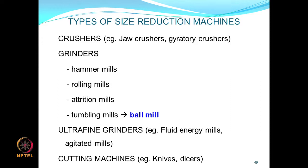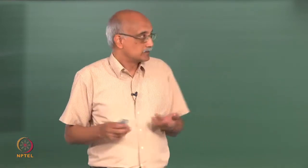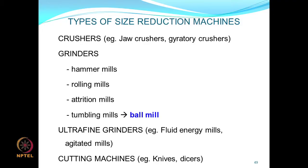Let us now transition into the top-down regime, which is most relevant for this course. There are various types of size reduction machines used in industry. At larger sizes, crushers take boulders and break them down into smaller rocks and pebbles. Then there are grinders — such as hammer mills, rolling mills, attrition mills, and tumbling mills (also known as ball mills) — which deal with particles in a finer size range. Ultra-fine grinders use fluid energy to grind even finer once regular grinding becomes ineffective. Finally, cutting machines do size reduction in one plane.